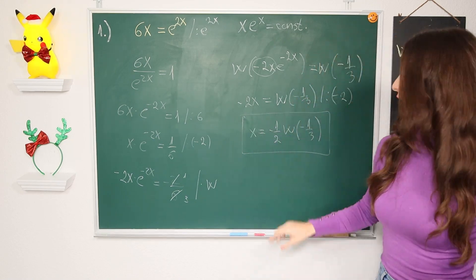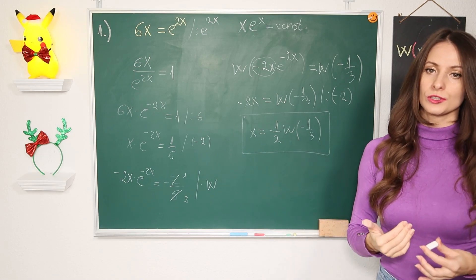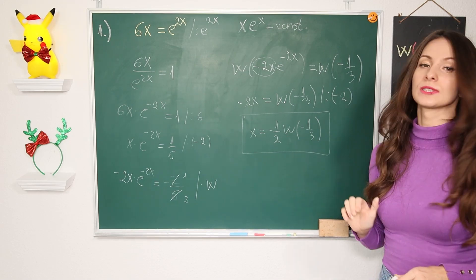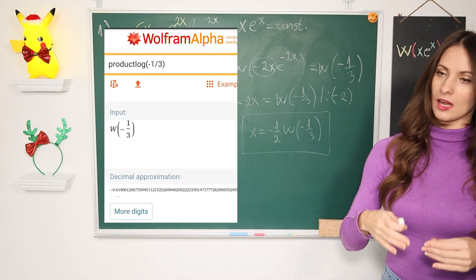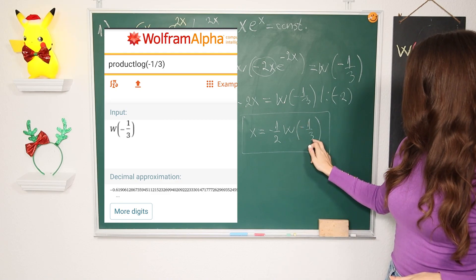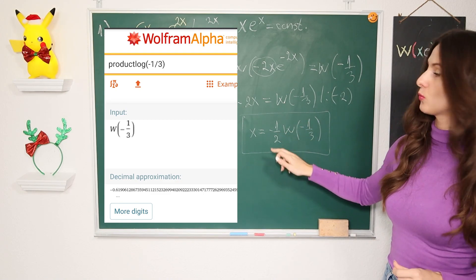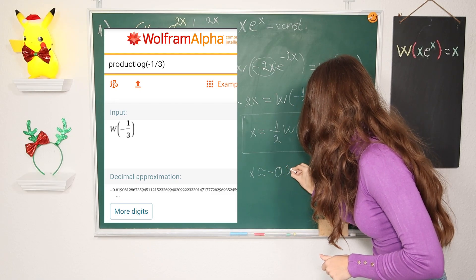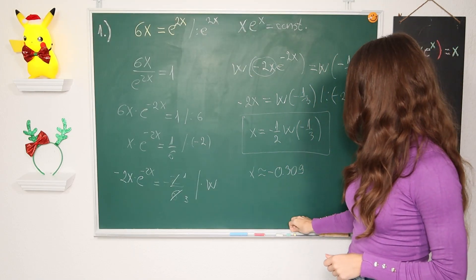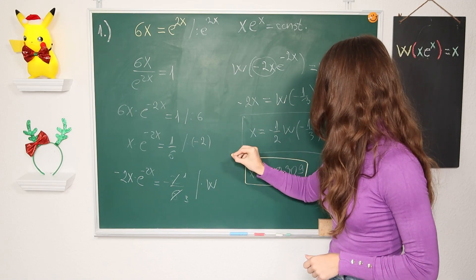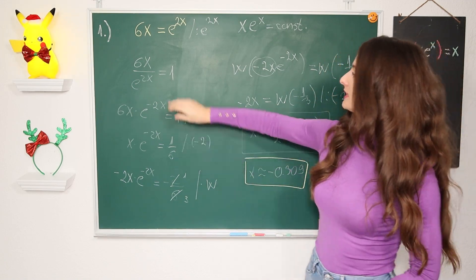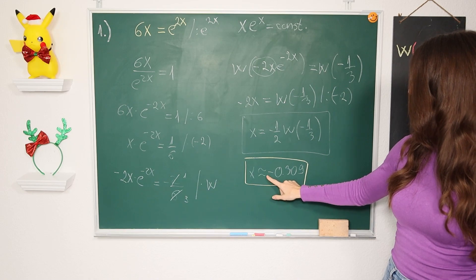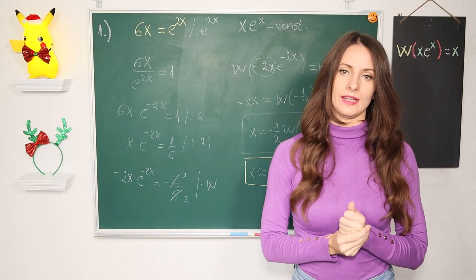The Lambert W function is also known as the product log function. To find the numerical value, use Wolfram Alpha and type 'product log of −1/3' then multiply by −1/2. You get that x is approximately −0.309. So from the equation 6x = e^(2x), we found x ≈ −0.309.